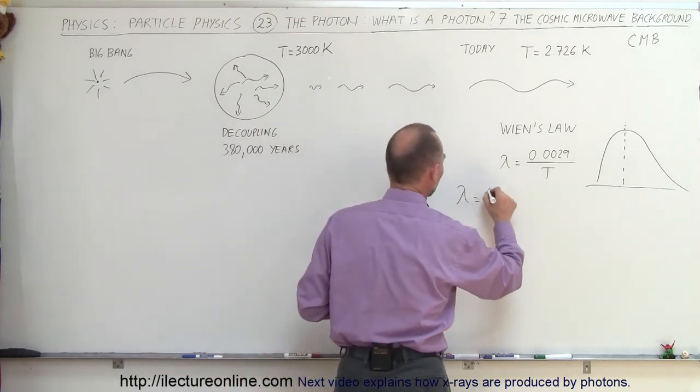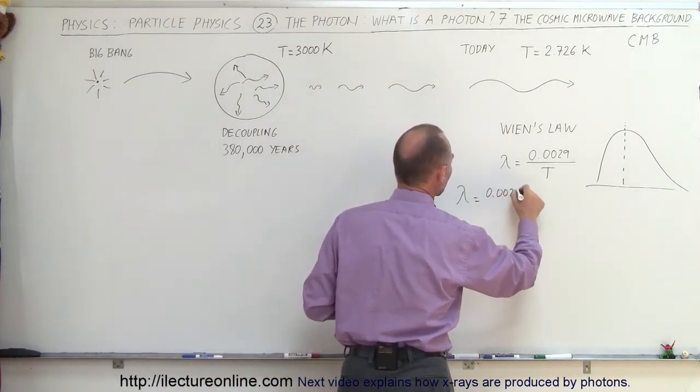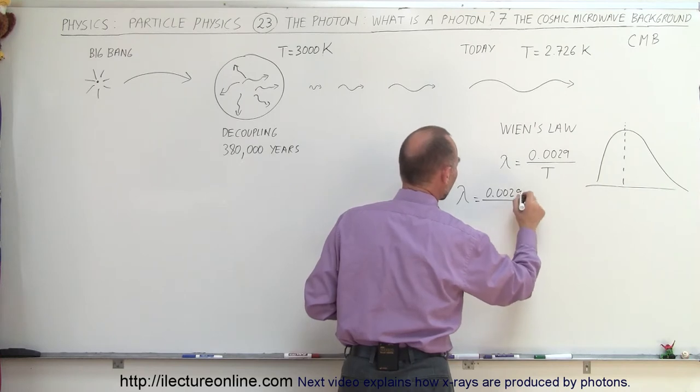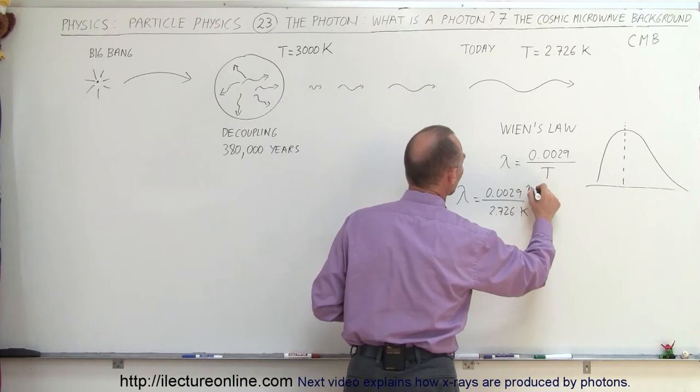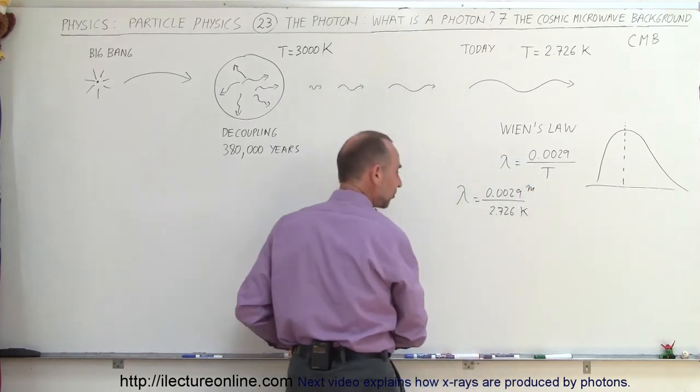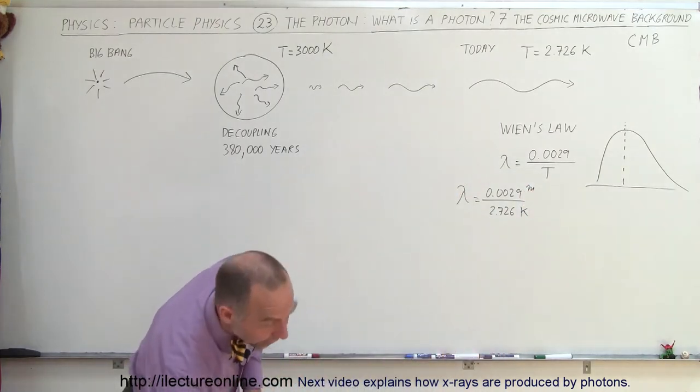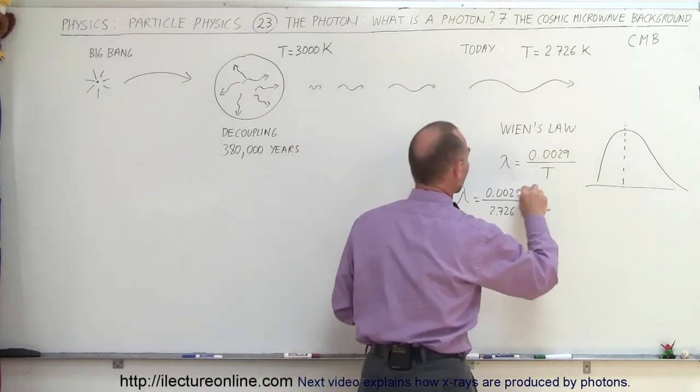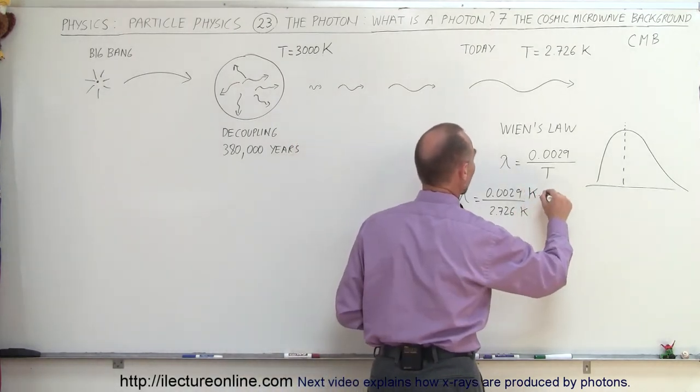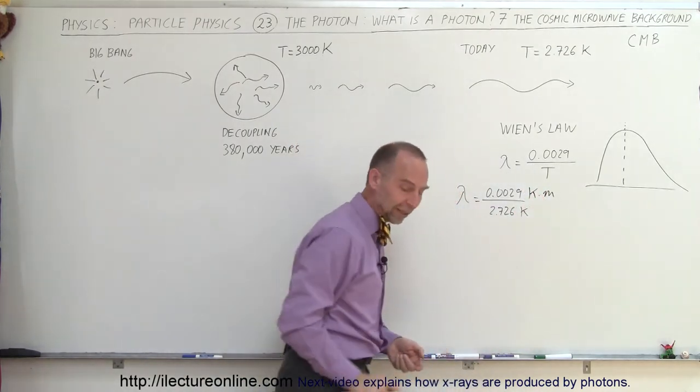The wavelength is equal to 0.0029 divided by the temperature, which is 2.726 Kelvin. And this of course would be meters, or Kelvin times meters actually. The units of that constant is Kelvin times meters. And so we end up with wavelength in meters.